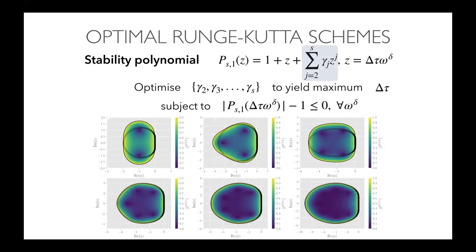Examples of optimal stability polynomials are shown: the top-left shows an optimal two-stage scheme, and the bottom-right shows an optimal seven-stage scheme. As we add more stages, these regions of stability get much, much larger — the axes are changing on these plots. The bottom-right scheme has roughly 10 to 15 times larger stability region than the two-stage scheme.